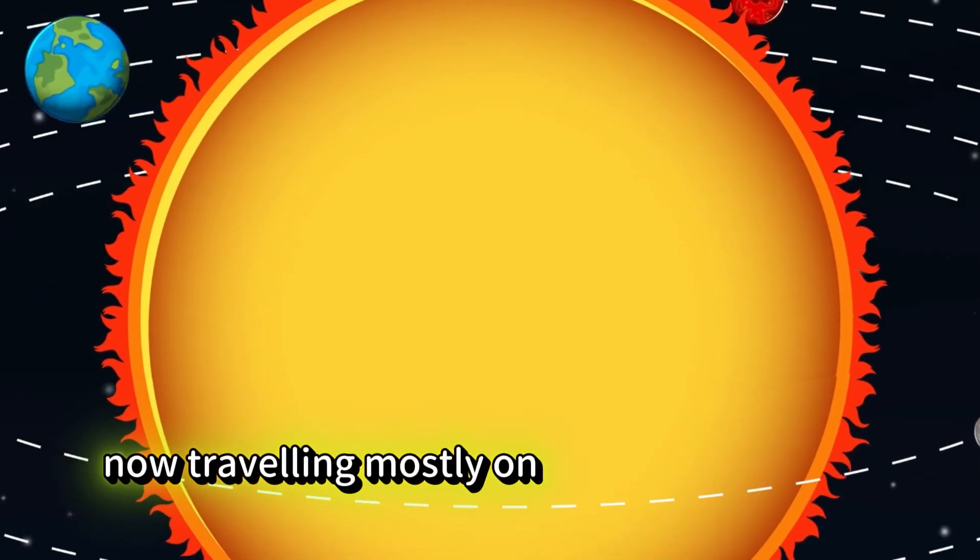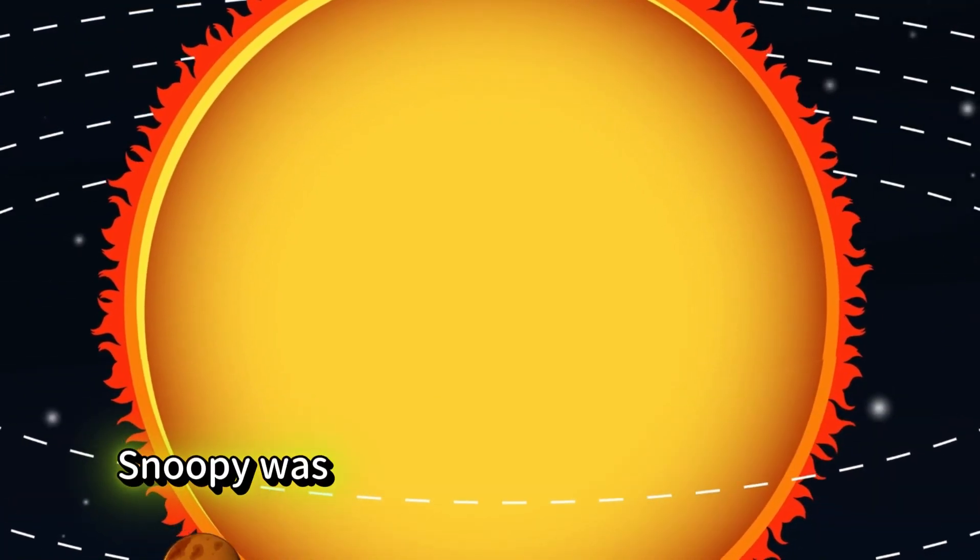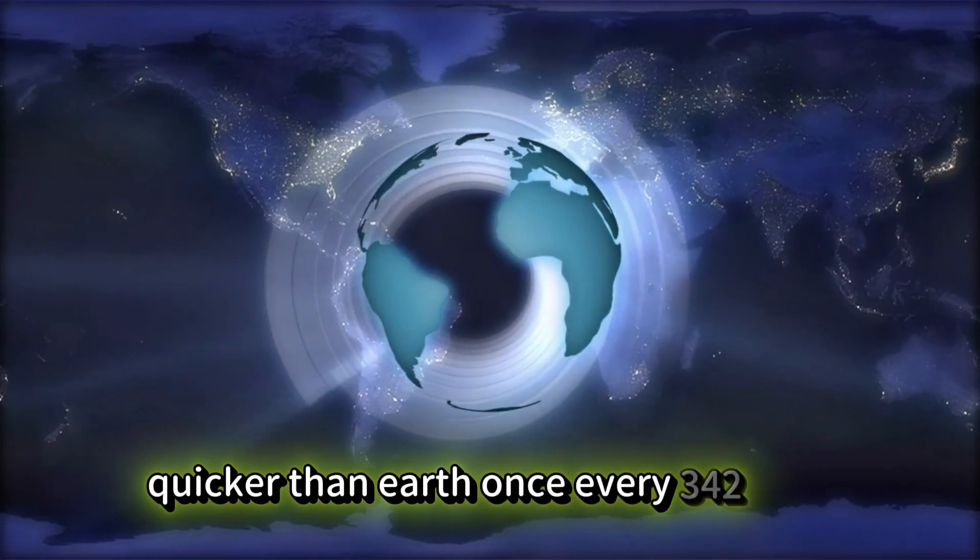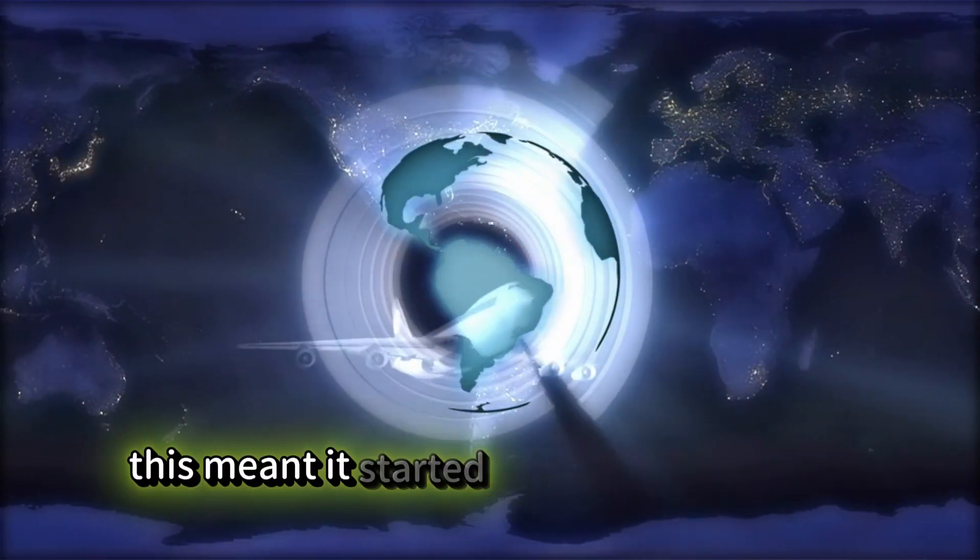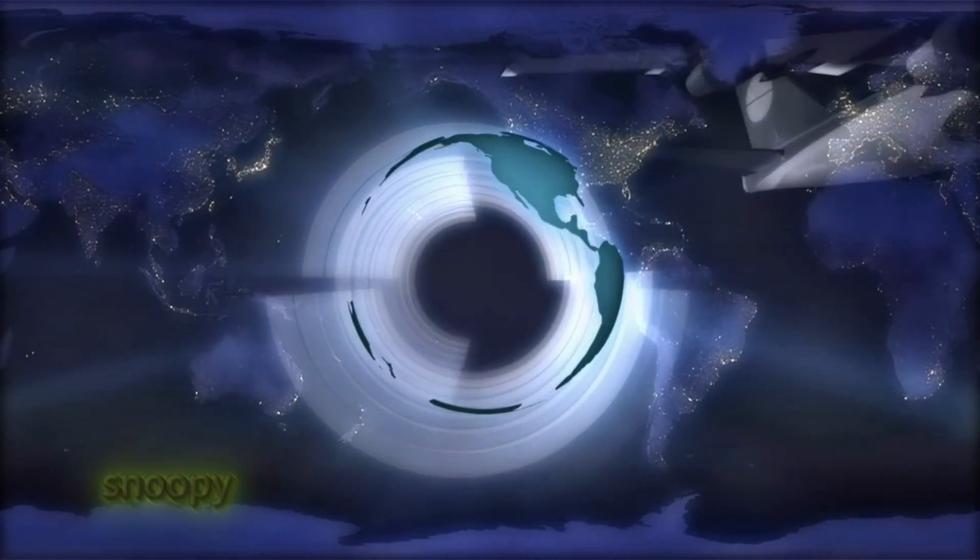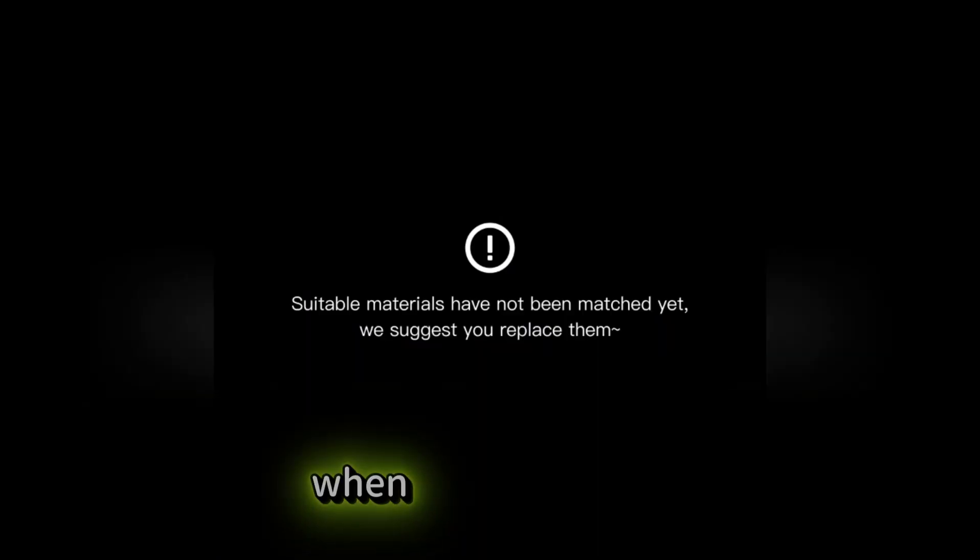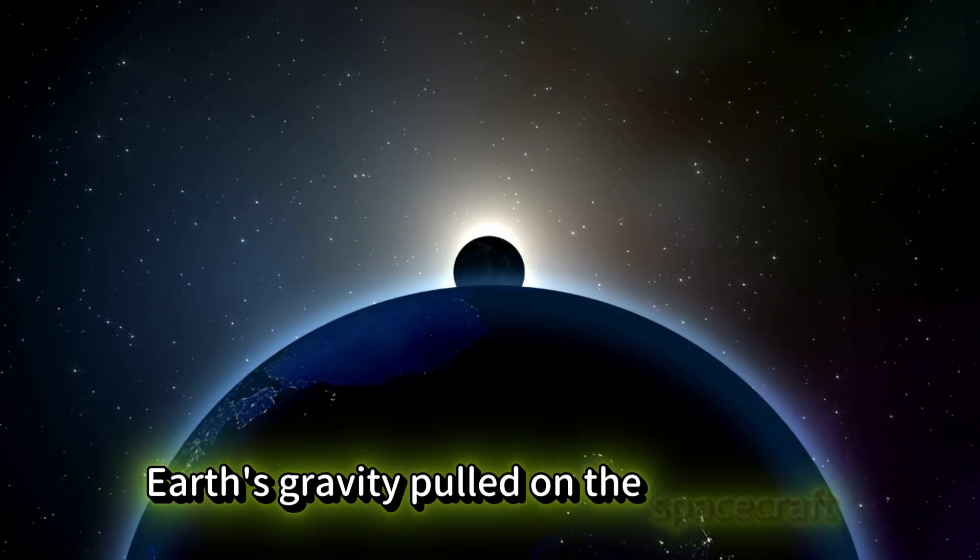Now traveling mostly on the inside of Earth's orbit, Snoopy was completing its lap around the sun quicker than Earth, once every 342 days. This meant it started to race ahead of the Earth and slowly pull away. Snoopy continued racing around the sun for another 15 years before it finally made a close flyby of Earth. When this happened, Earth's gravity pulled on the spacecraft, changing its orbit ever so slightly.